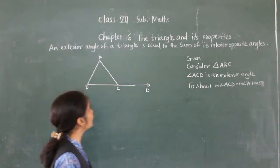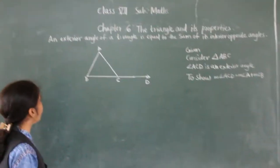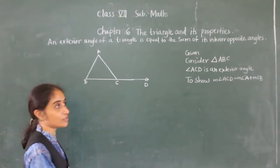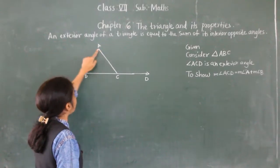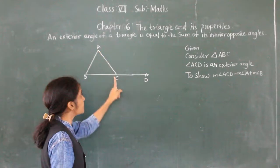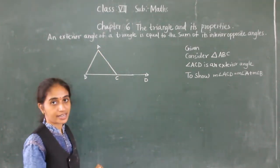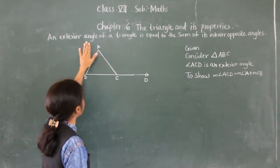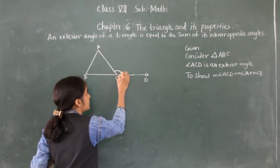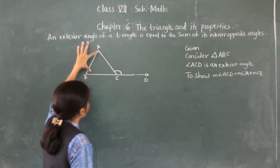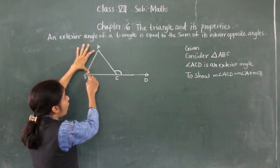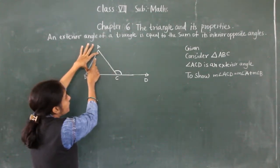Hello everyone, let's learn today the exterior angles property. What is the exterior angle property? This is triangle ABC, and the exterior angle of the triangle is equal to the sum of its interior opposite angles.